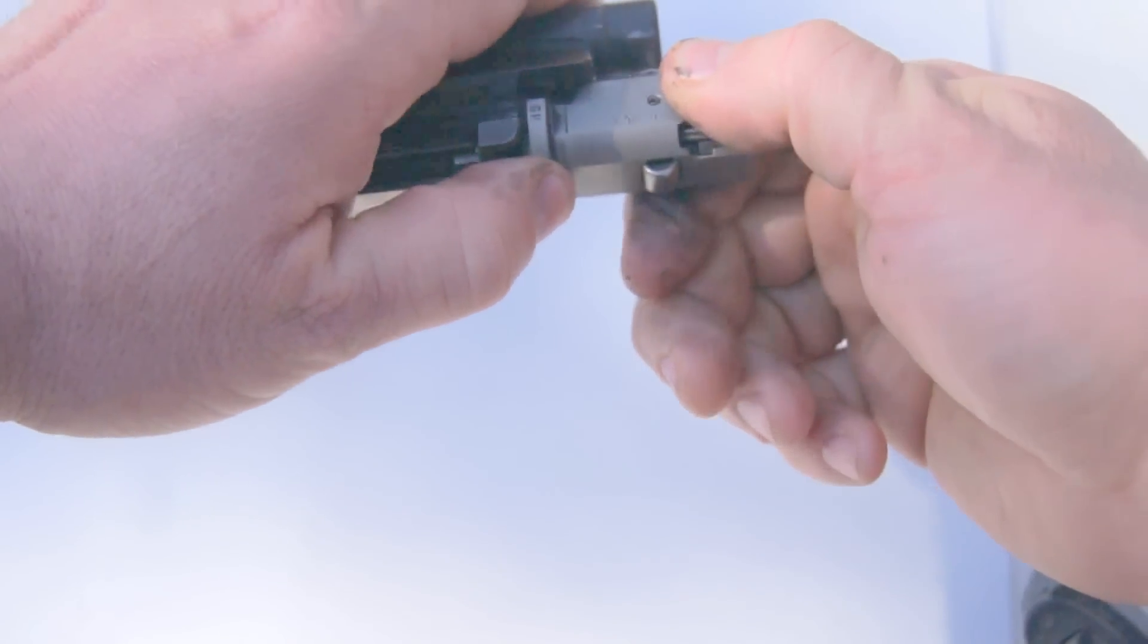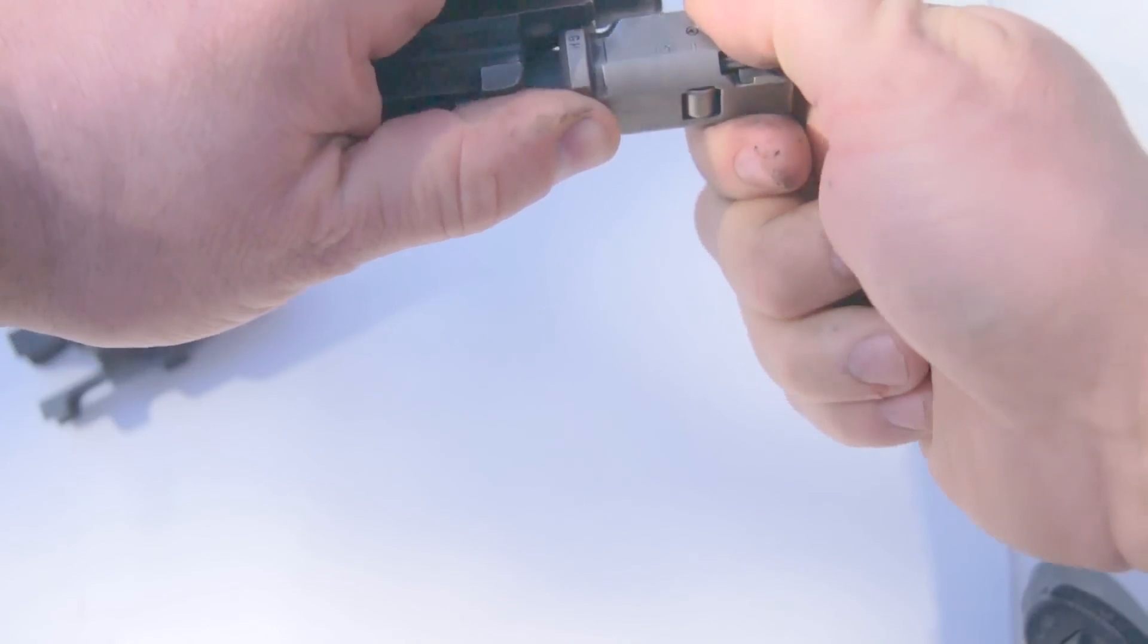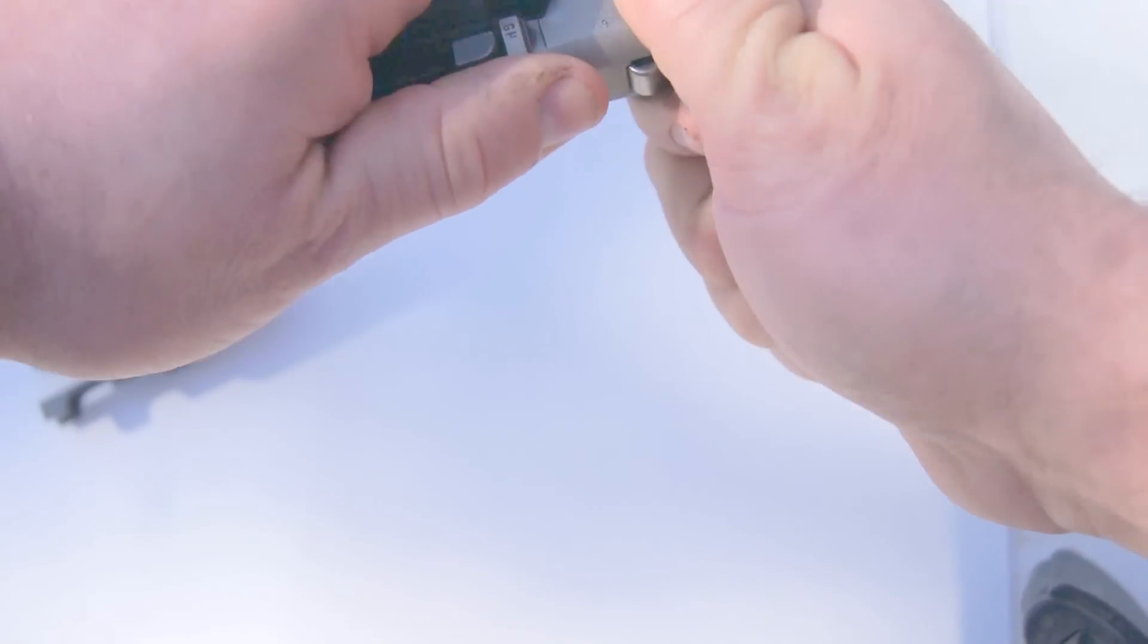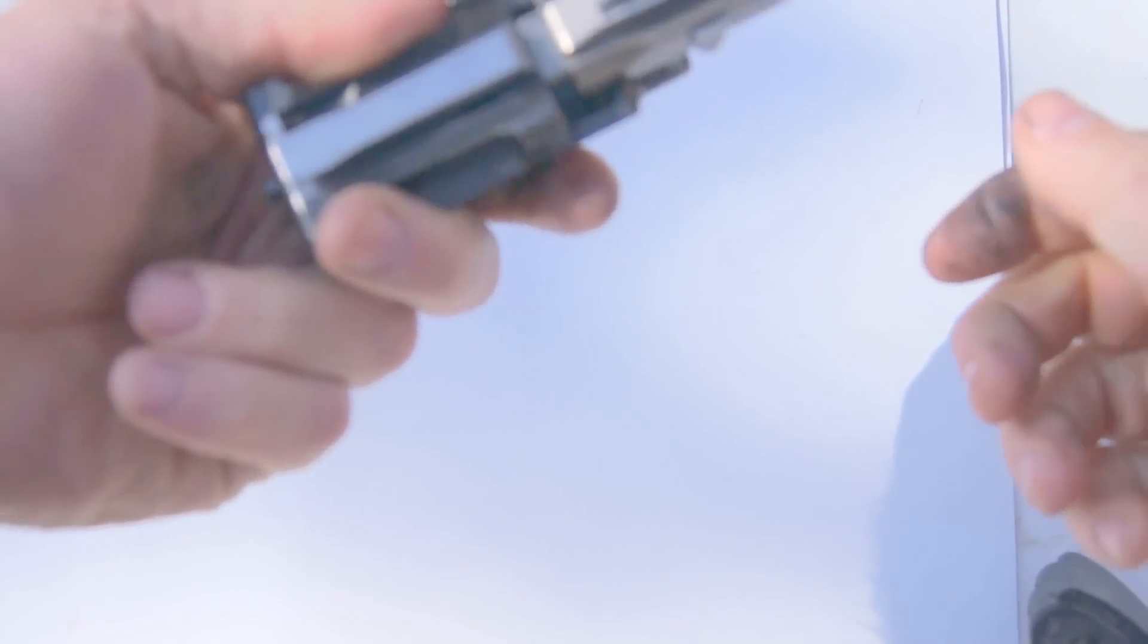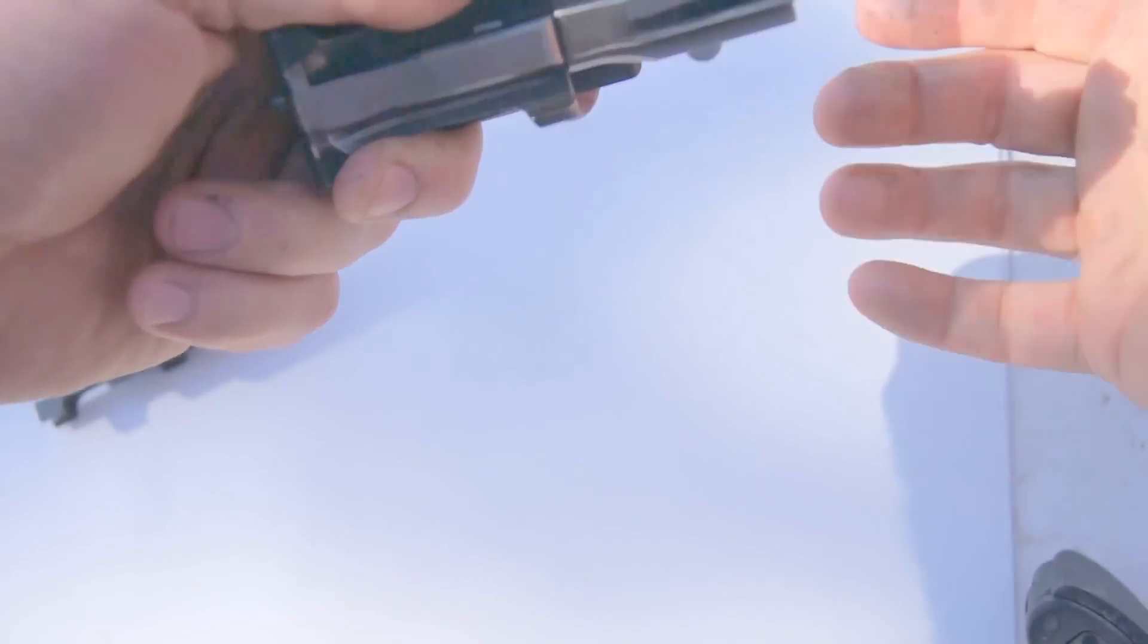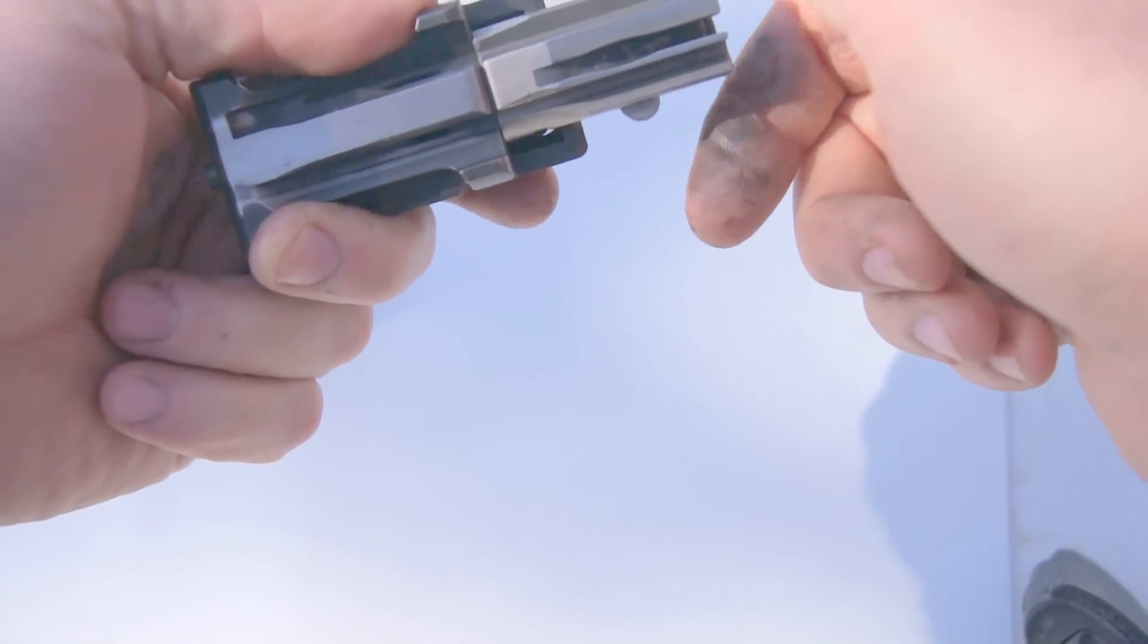Now, here's the tricky part. Take your thumb. Press out. Turn. Now, you can place it back into the carrier. If this gets locked back, you're not going to be able to place it back into the receiver.